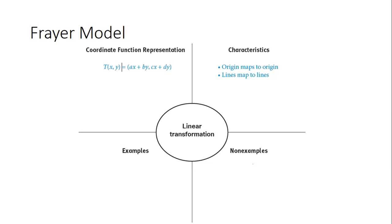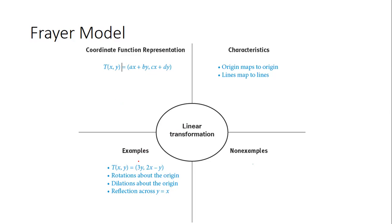Now for examples of linear transformations: notice how we have the transformation of (x, y) equaling (3y, 2x minus y). Even though this appears not to be in ax plus by form, it technically is — it's just 0x plus 3y. And the second component is in the form of ax plus by; it's 2x plus negative y. Mathematicians like to be efficient, so that 'plus negative' became 'minus.' These are examples of rotations about the origin.